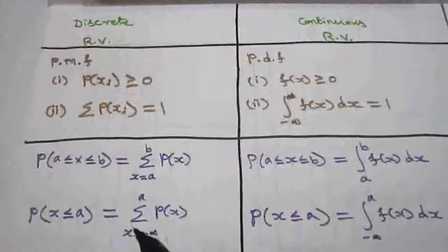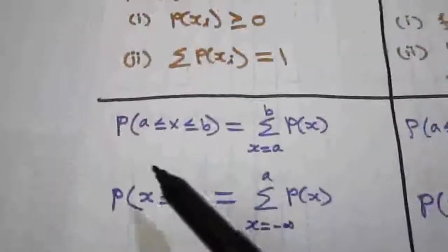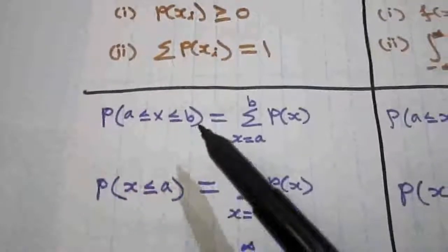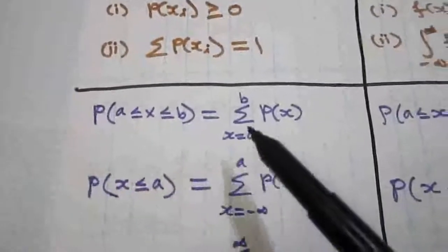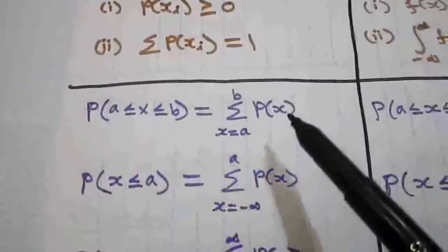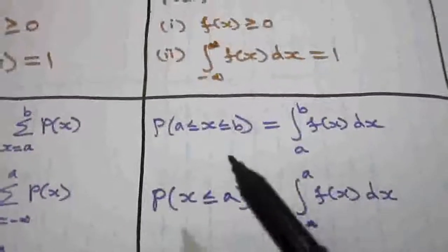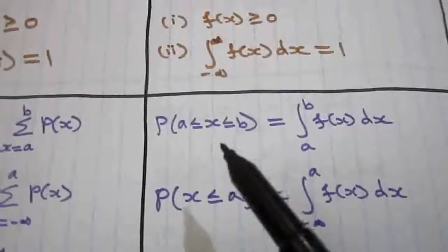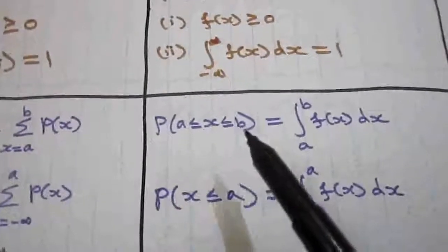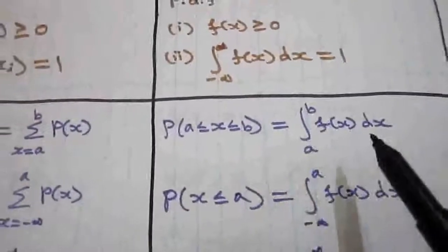For a discrete random variable, P(a ≤ x ≤ b) is the summation from x = a to b of p(x). Correspondingly, for the continuous random variable, P(a ≤ x ≤ b) is the integral from a to b of f(x) dx.